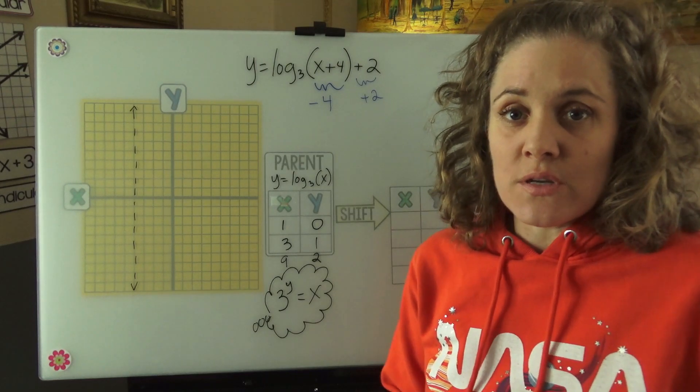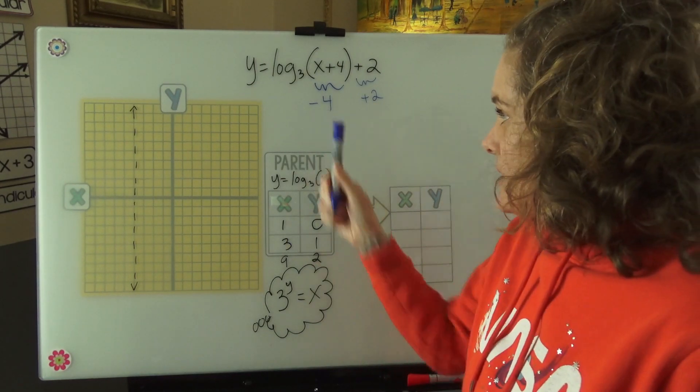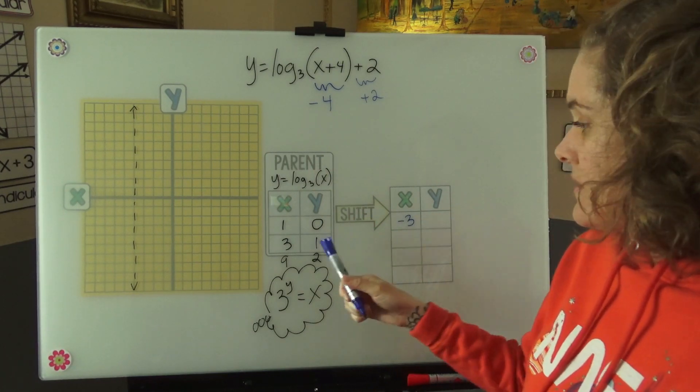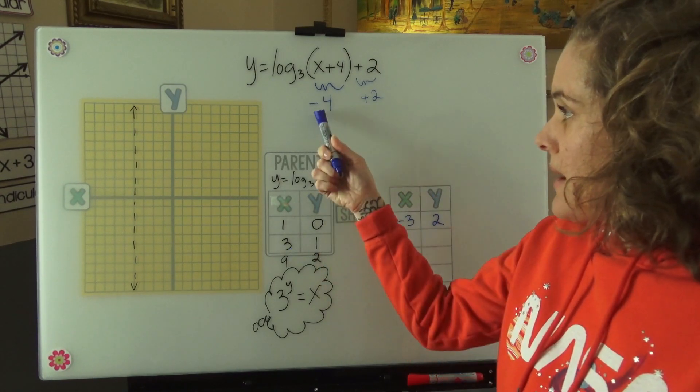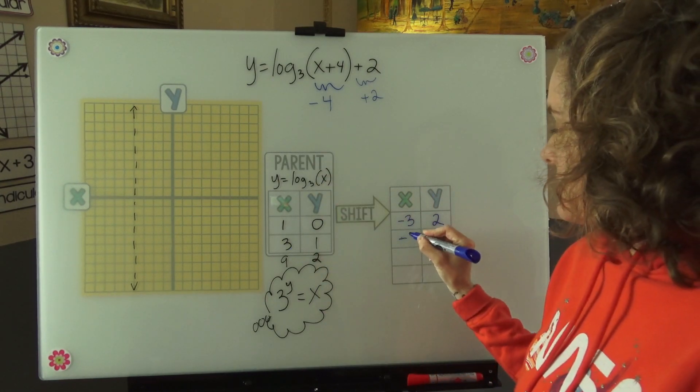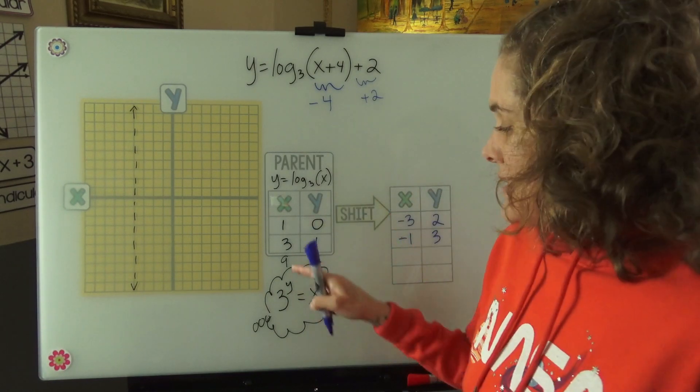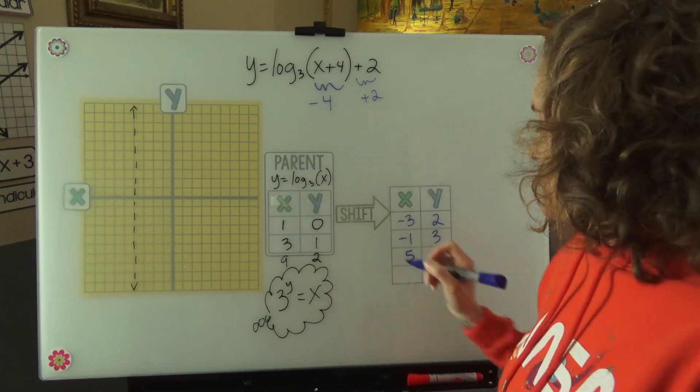This is the same pattern that you'll see with any function in vertex form. 1 minus 4 is negative 3, 0 plus 2 is 2, 3 minus 4 is negative 1, 1 plus 2 is 3, 9 minus 4 is 5, 2 plus 2 is 4.